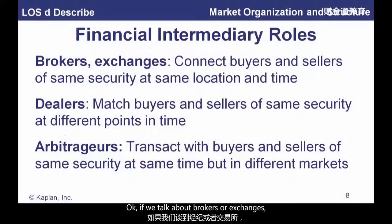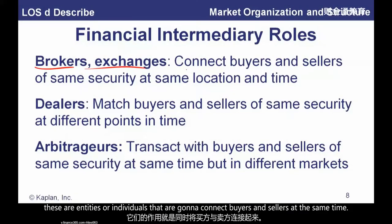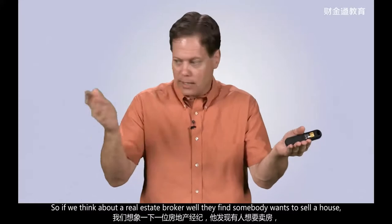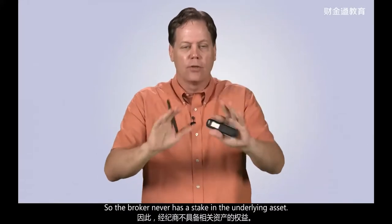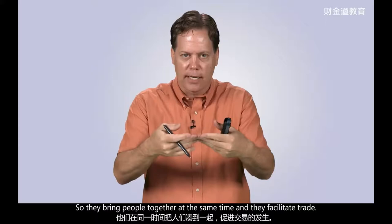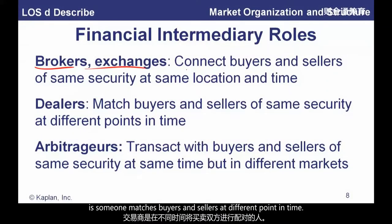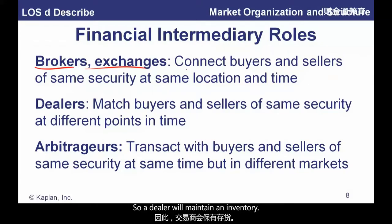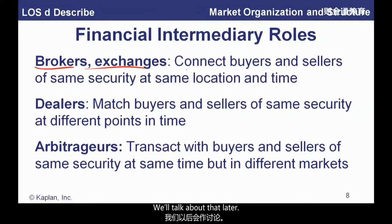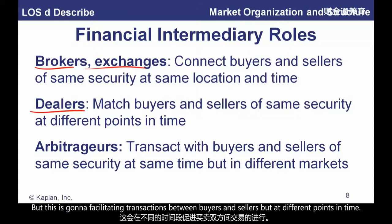What about financial intermediary roles? Brokers and exchanges connect buyers and sellers at the same time. Think of a real estate broker — they find someone who wants to sell a house and someone who wants to buy, bring them together, and there's a transaction. The broker never has a stake in the underlying asset. A dealer, on the other hand, matches buyers and sellers at different points in time. A dealer maintains inventory — they'll buy some of the asset and sell it when the need arises. The broker makes a commission; the dealer profits from the bid-ask spread.